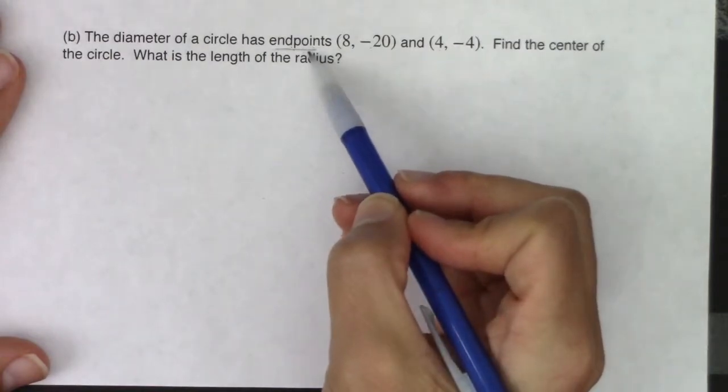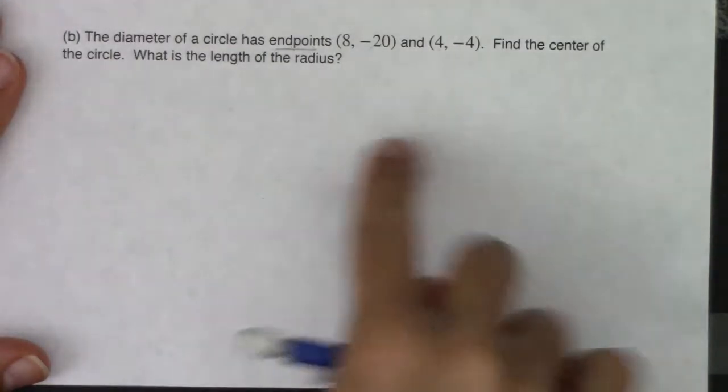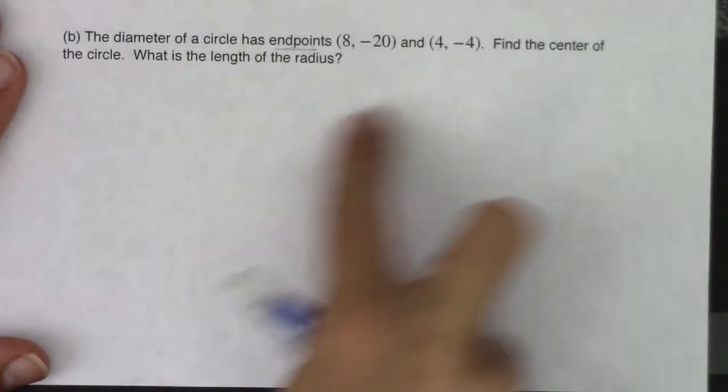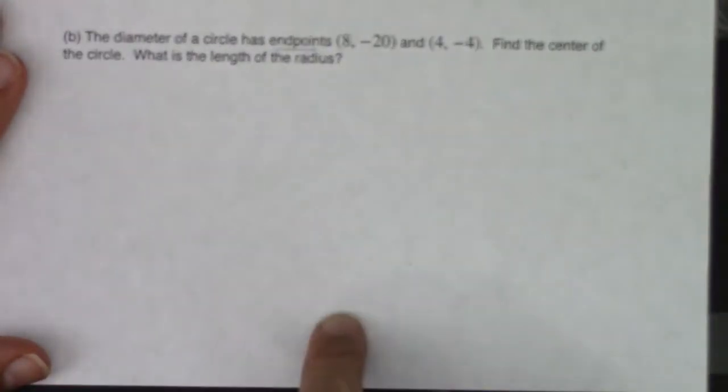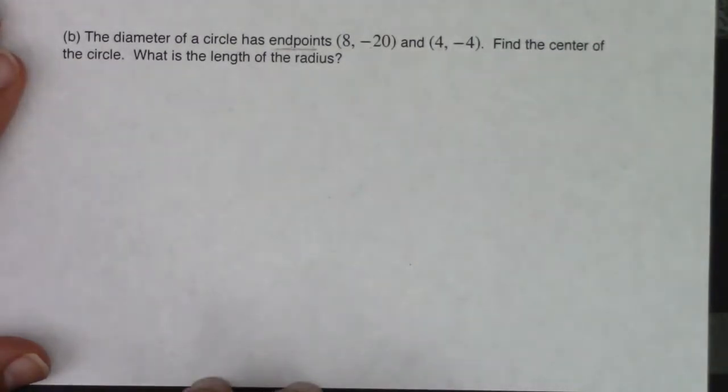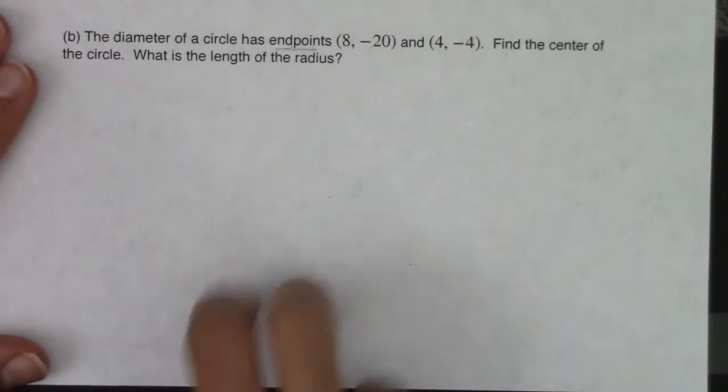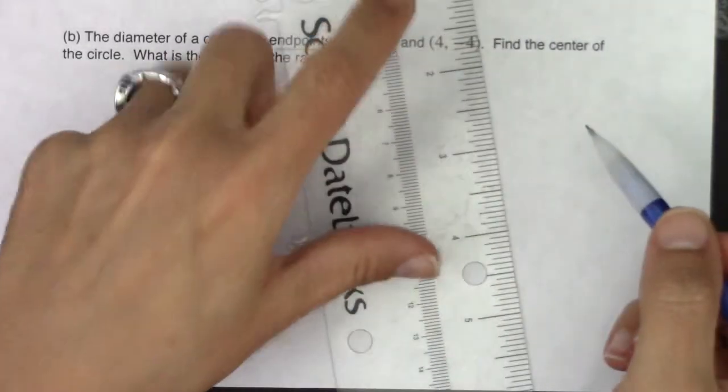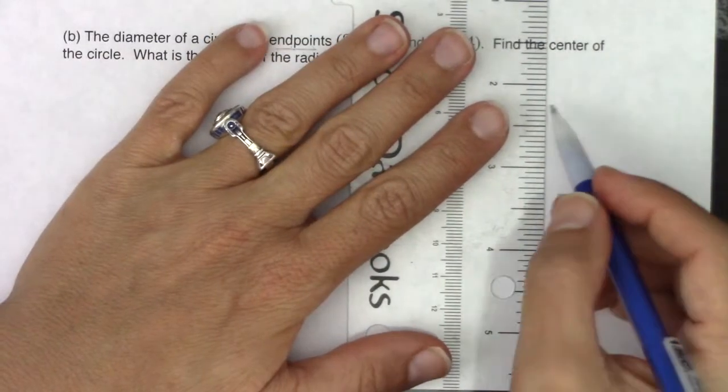So this is a different type of problem. They're giving me two endpoints. And if you remember that if you have a circle, the diameter goes right through that center and the endpoints are on the circumference, or I should say the boundary of the circle. And then the center would be in the middle.